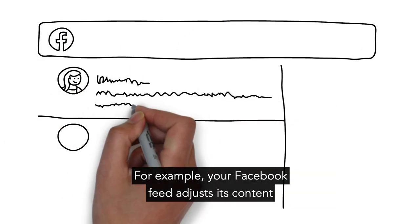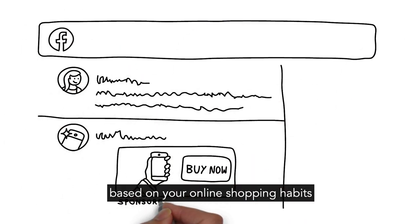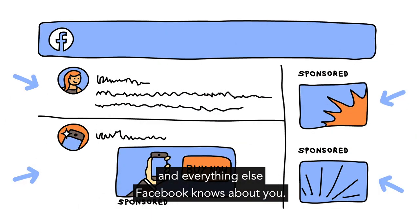For example, your Facebook feed adjusts its content based on your online shopping habits and everything else Facebook knows about you.